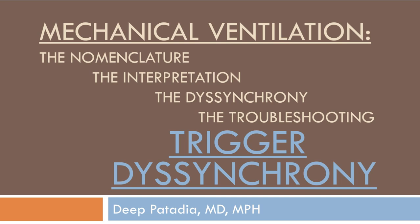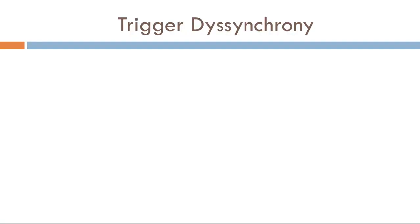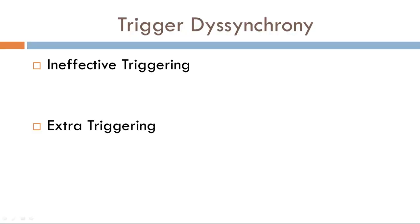Hi everyone. In this next talk, we're going to be talking about trigger dyssynchrony. There are two different types of trigger dyssynchrony: ineffective triggering and extra triggering.